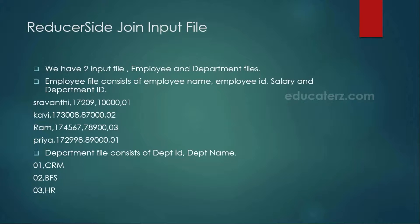As we discussed in the last module, if you have multiple data files and all the data files are larger datasets, then you must need to go to the Reducer Side Join. In case if any of the files are smaller, you can use the distributed cache and load them into the RAM and use the Map Side Join. Otherwise, you must need to use the Reducer Side Join.